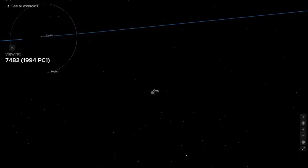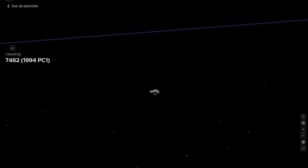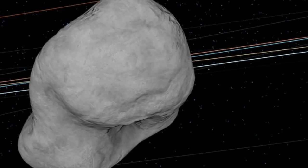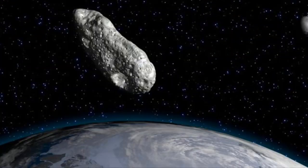The asteroid 7482, also known as 1994 PC-1, is about 1.6 kilometers wide and has been categorized by U.S. space agency NASA as a potentially hazardous object due to its relative proximity to Earth while shooting past.